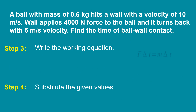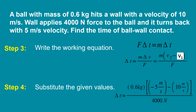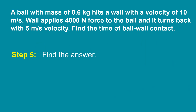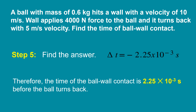Step 3: Write the working equation. Force times change in time is equal to mass times change in velocity. Using this general formula, we can derive the formula for time. Change in time is equal to mass times change in velocity over force, or simply mass times final velocity minus initial velocity over force. Substituting the given values, change in time is equal to 0.6 kilograms times negative 5 meters per second minus 10 meters per second, over 4,000 newtons. The final answer is change in time is equal to negative 2.25 times 10 to the negative 3 seconds. Therefore, the time of the ball-wall contact is 2.25 times 10 to the negative 3 seconds before the ball turns back.